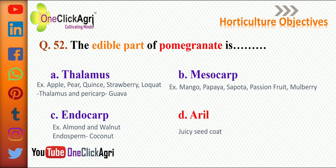Mesocarp is the edible part of mango, papaya, sapota, passion fruit, and mulberry. Endocarp is the edible part of almond and walnut. And endosperm is the edible part of coconut.